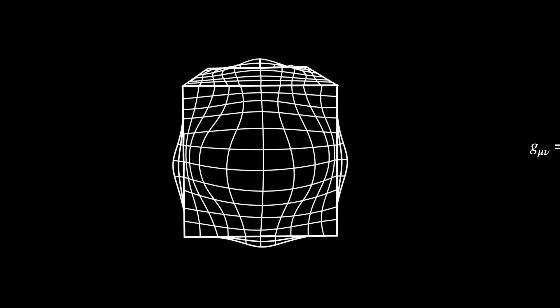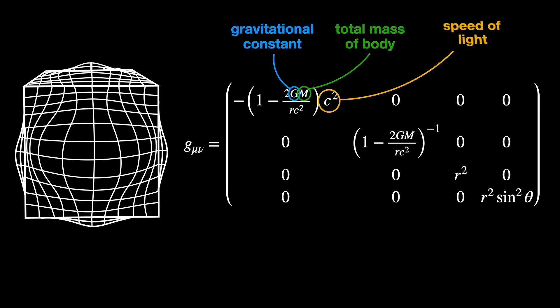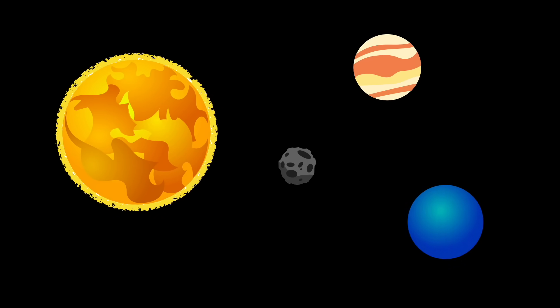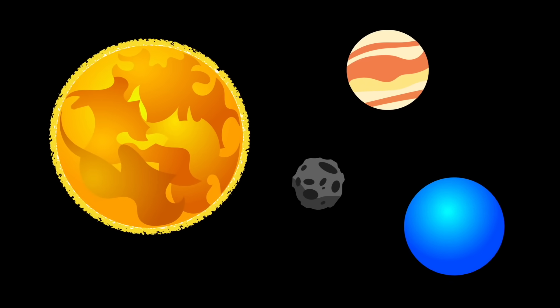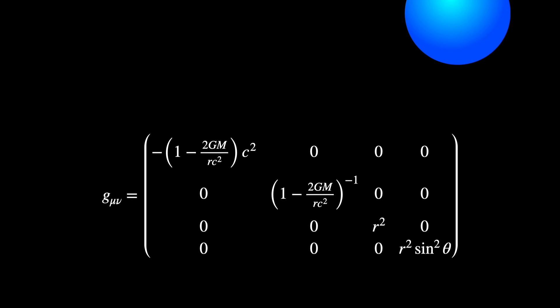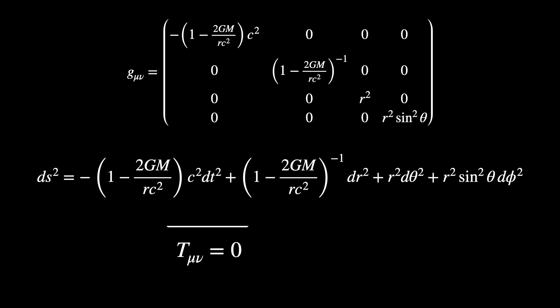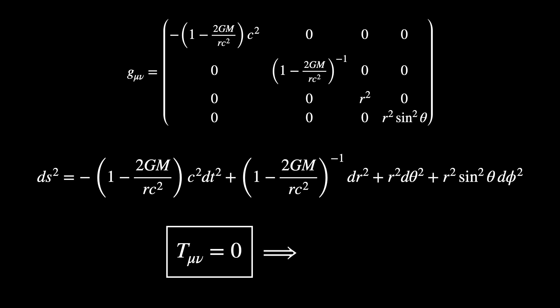Second: Schwarzschild spacetime. In spherical coordinates, the Schwarzschild metric includes the gravitational constant G, the total mass M of the body being studied, and the speed of light c. It describes how a massive object with spherical symmetry, like a planet or a star, bends spacetime around it and inside it as well. This is also a vacuum solution where T mu nu equals zero, and as a consequence, the Einstein tensor G mu nu is also zero.